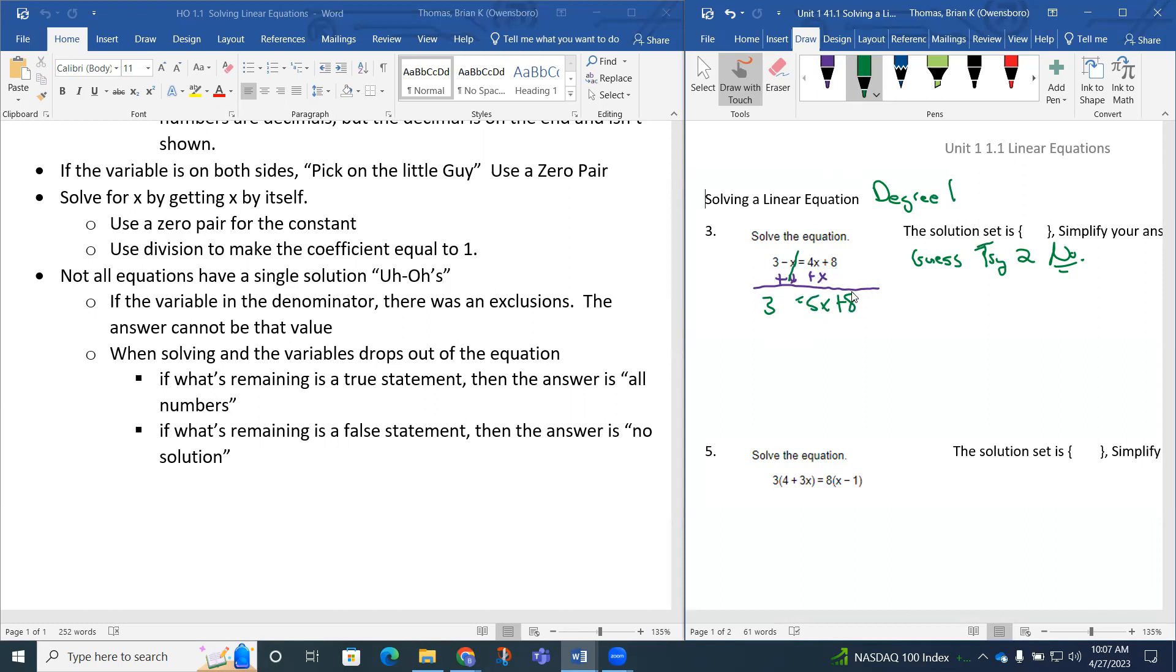From there, the next step is to solve by getting x by itself. I like to have the variable on the left side, so I would write this as 5x plus 8 equals 3. That's called the symmetric property. If 3 equals 5x plus 8, then 5x plus 8 equals 3.